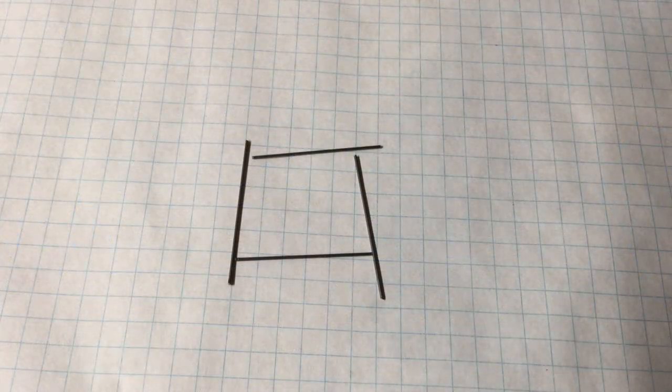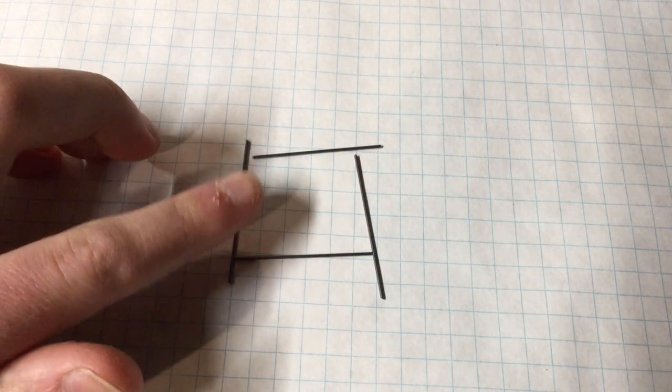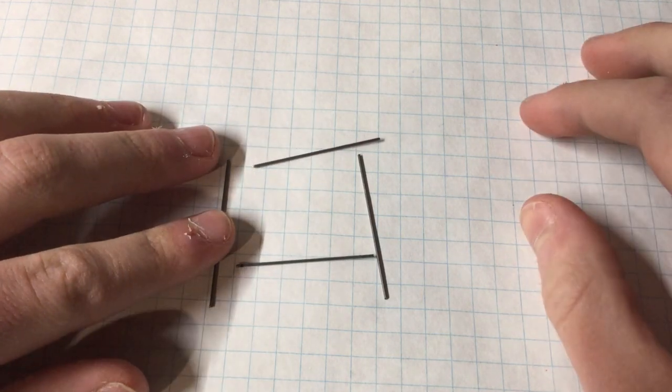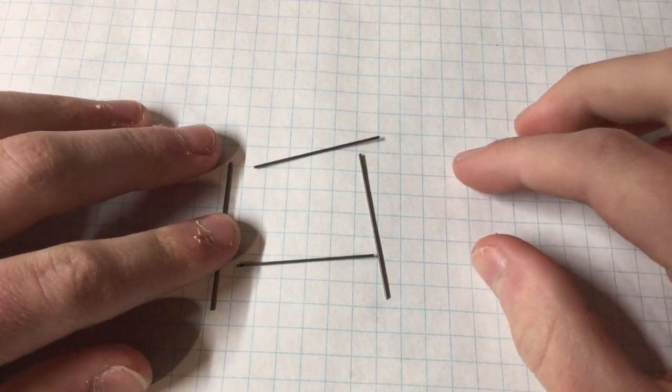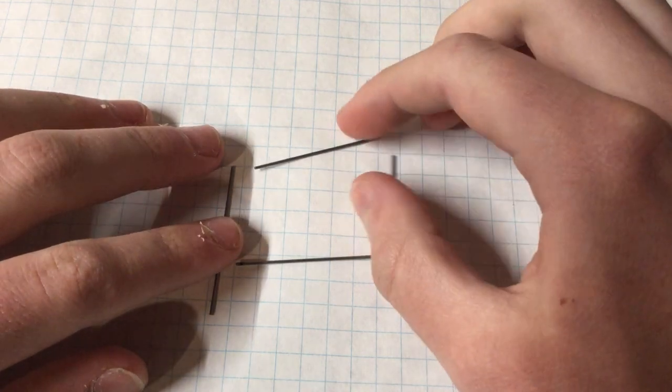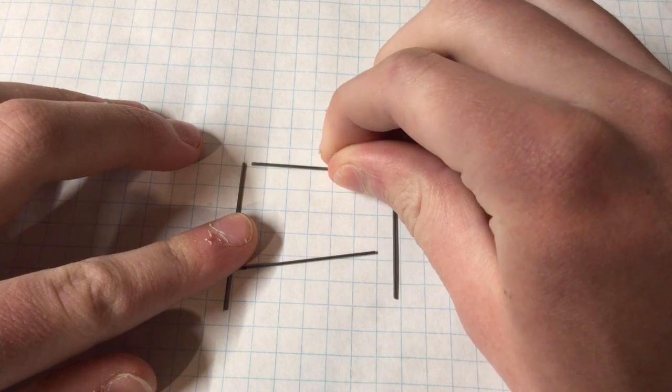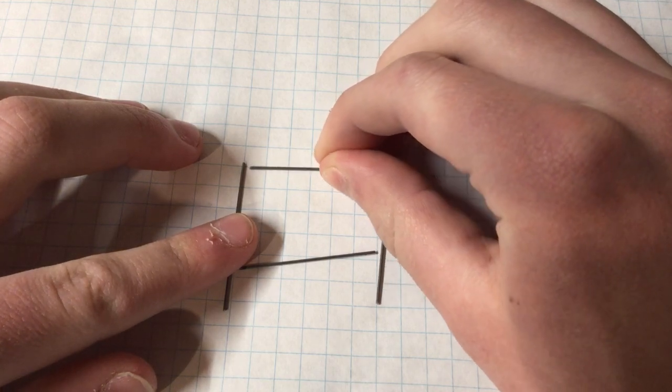So I got all my pieces cut and I have them here - I have two sides and then two cross pieces. And they are sitting on a piece of graph paper, and that is because I want to be able to make sure they are perfectly at 90 degrees to each other, and that will just help with the lining up process.